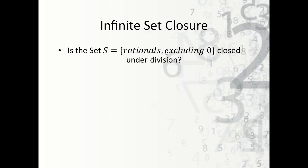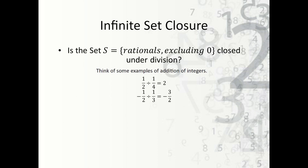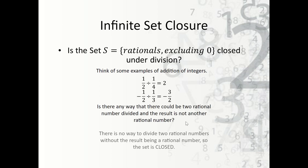What if we said the set of rationals excluding zero is closed under division? We think of some examples: one half divided by one fourth equals two, and negative one half divided by one third — remember, dividing is just multiplying by the reciprocal. Is there any way to get something other than a rational number? We keep thinking of examples and we can see there is no way. We excluded zero, so we don't have to worry about dividing by zero. So we can keep coming up with examples and see that the set is actually closed — because no matter what, when I divide two fractions by each other, I will always get another fraction.